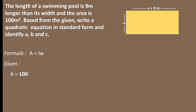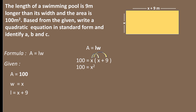Area A = 100, width w = x, and length l = x + 9. Substituting into the area formula: 100 = x(x + 9). Applying the distributive property: x · x = x² and x · 9 = 9x, giving us 100 = x² + 9x. From here we can already identify the quadratic, linear, and constant terms.